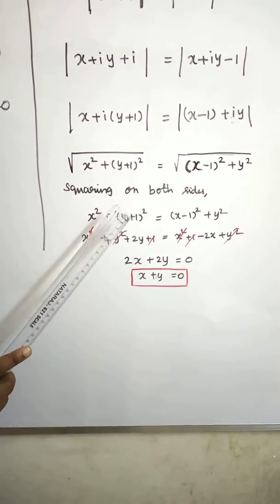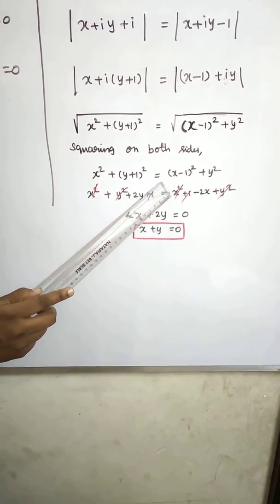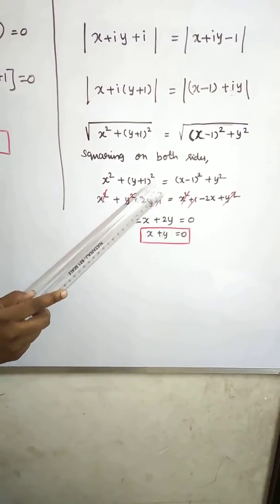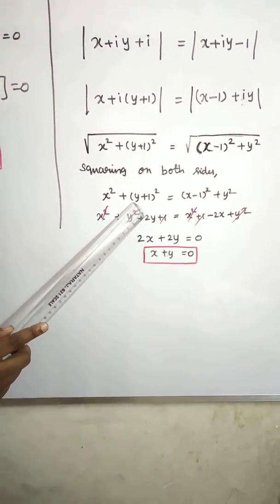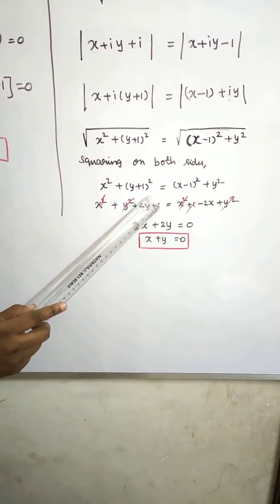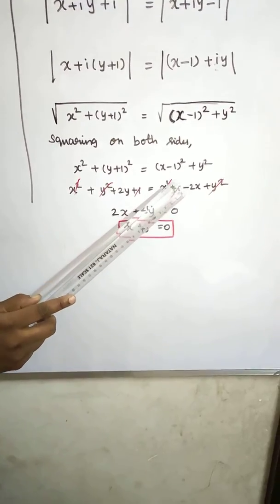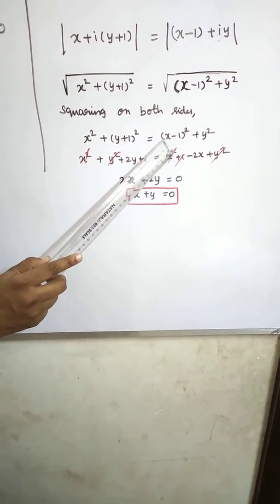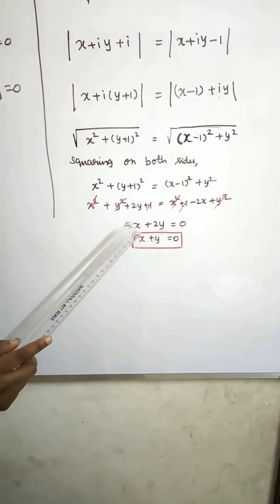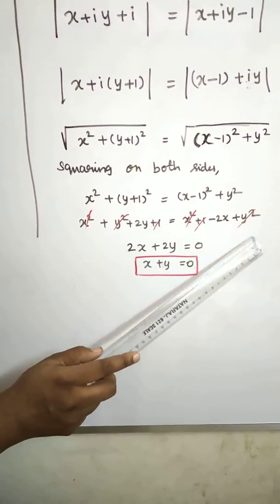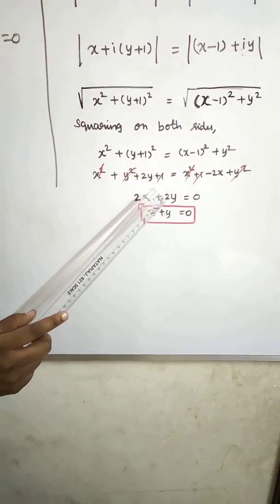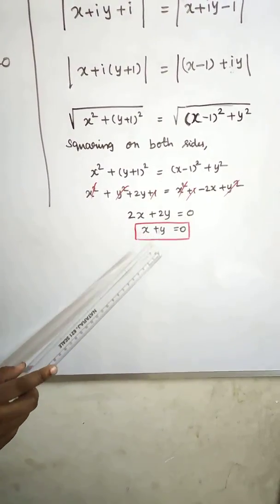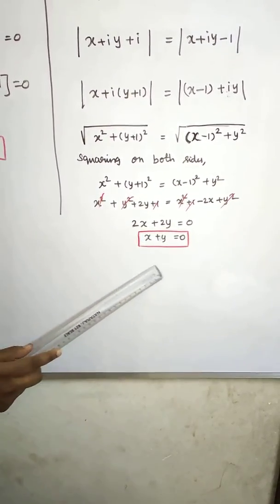Squaring both sides: x squared plus y plus 1 whole squared equals x minus 1 whole squared plus y squared. Expanding y plus 1 squared as y squared plus 2y plus 1, and x minus 1 squared as x squared minus 2x plus 1. Cancelling x squared, y squared, and 1 from both sides, we get 2y plus 2x equals 0, so x plus y equals 0.